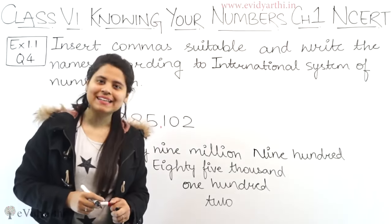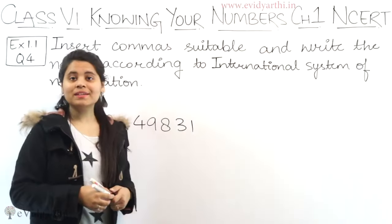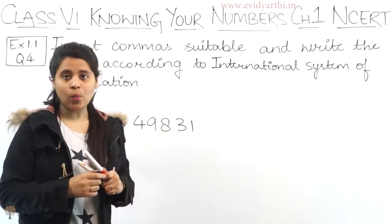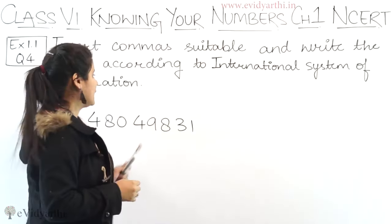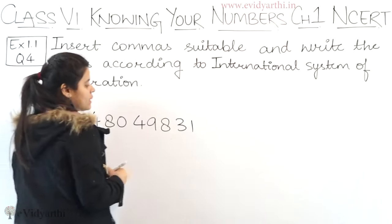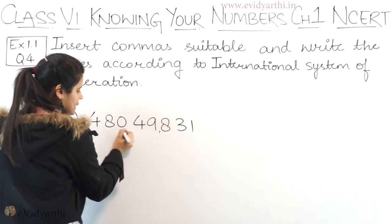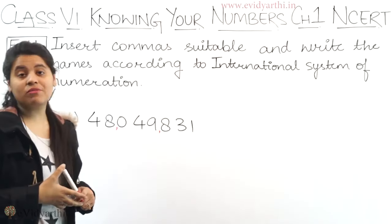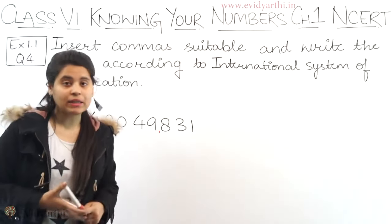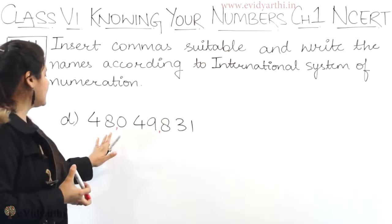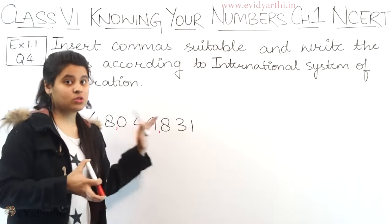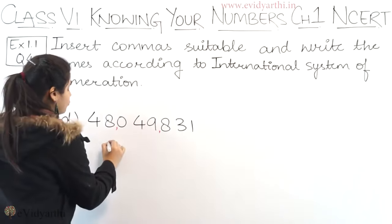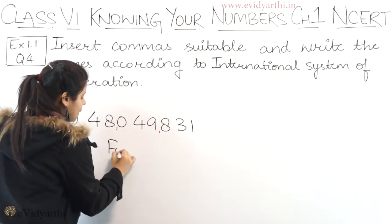Now coming to part D. Part D has the number 48,049,831. Again, we will put commas first — three digits, then again three digits. The first two digits are 48. After 48, we have 6 digits. 6 digits means million. So this will become 48 million.